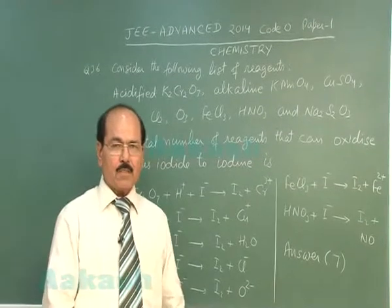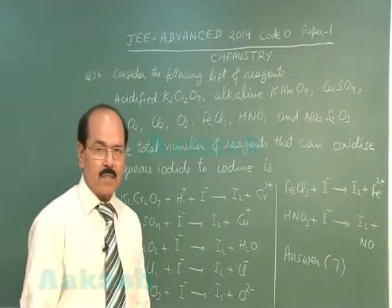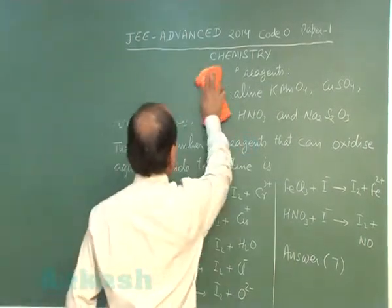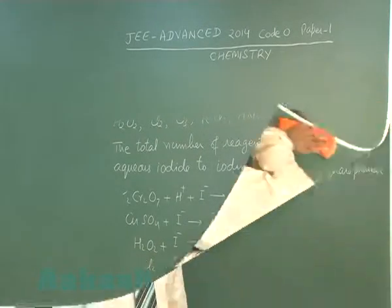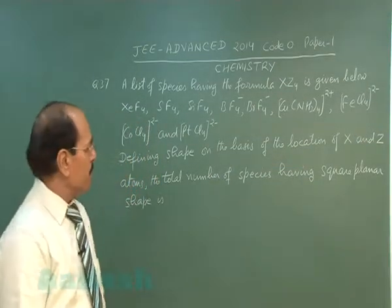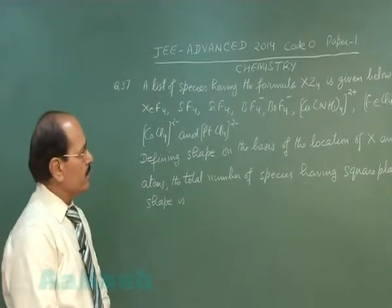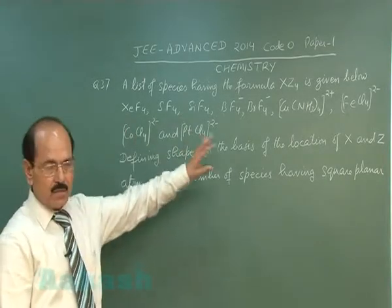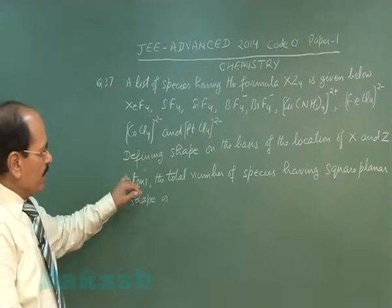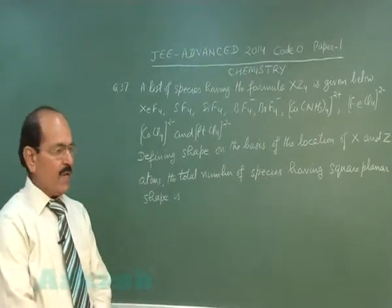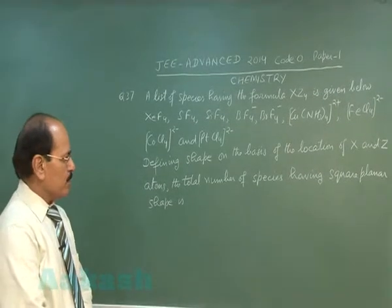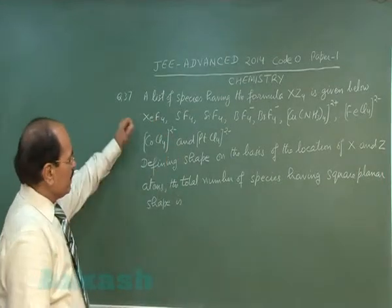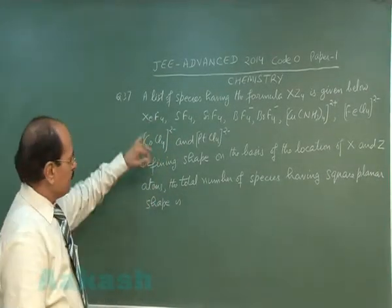We now move on to question number 37. Question number 37 reads: a list of species having the formula XZ₄ is given. Defining shape on the basis of the location of X and Z atoms, the total number of species having square planar shape is? Out of the given formulae, the ones which have square planar shape are: